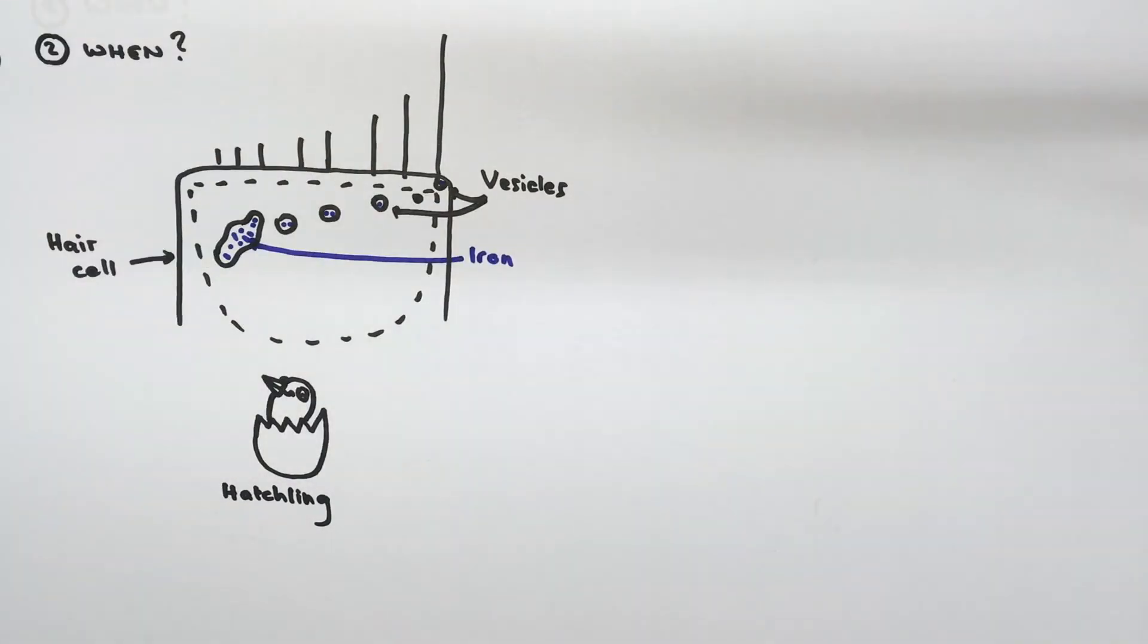During formation, cuticulosomes are initially rather small and diffuse in shape, but over time, the size and density of these organelles increases.